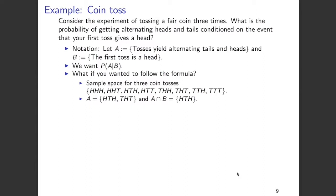Now, A intersection B is going to be HTH. This is because B is the event that the first toss is a head, and among the two elements in set A, only HTH satisfies this condition. So A intersection B is just HTH.